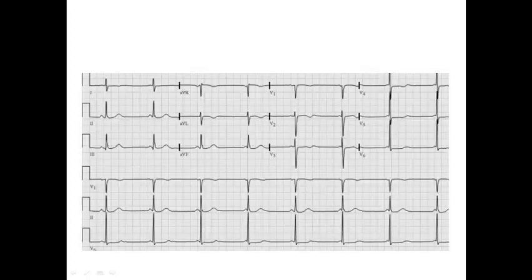Let's first look at this ECG. Some people may say they just see sinus rhythm with no problem — normal R-wave progression, normal axis, normal complex morphology, P-wave, T-wave, and one-to-one AV relationship. But if we focus on the strip in lead 2, we can notice that the P-R interval is not the same. Yes, there is a one-to-one AV relationship, but sometimes the P wave appears before the QRS in a normal way with a normal P-R interval, and sometimes it appears fused with the complex.